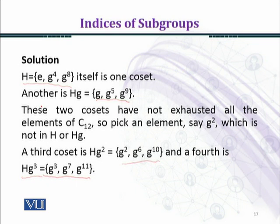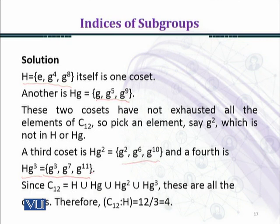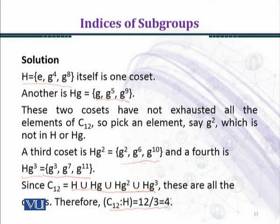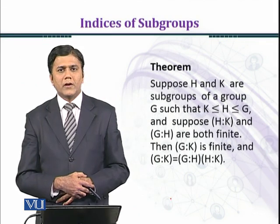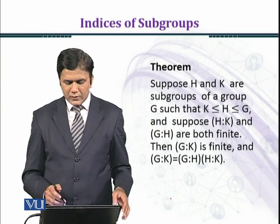So the right-hand side gives us those elements since C12 equals H union HG union HG² union HG³. As known, these cosets provide a partitioning of the group C12, and the index of H in C12 is equal to 12 over 3, which is equal to 4.